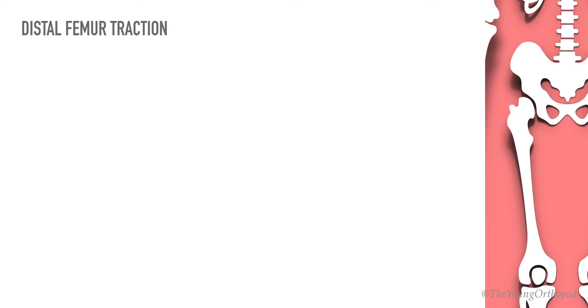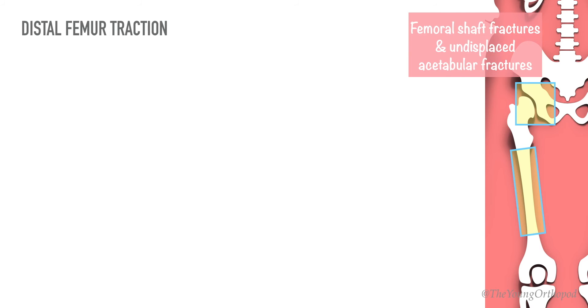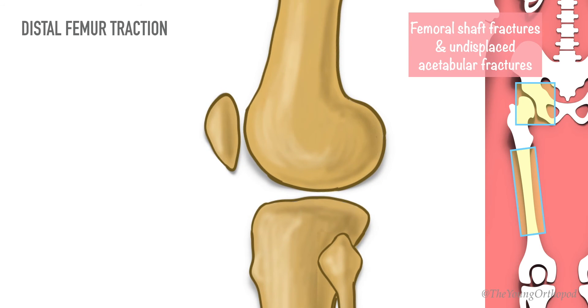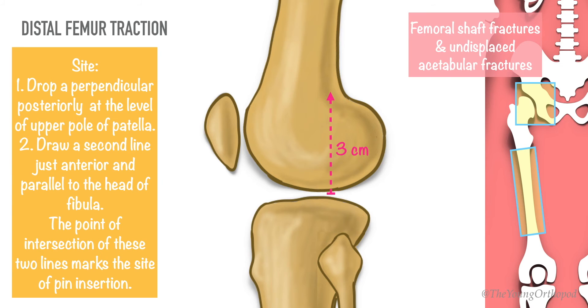Indications for distal femur traction include femoral shaft fractures and acetabular fractures. The entry site of the pin is 3 centimeters proximal to the lateral joint line, which corresponds to the upper limit of the lateral femoral condyle.